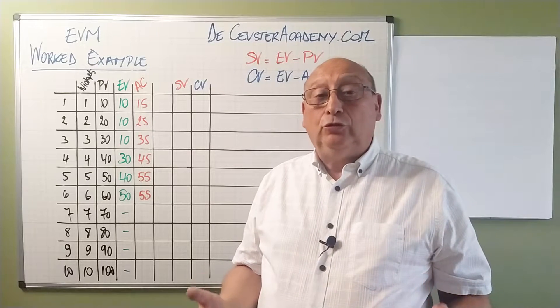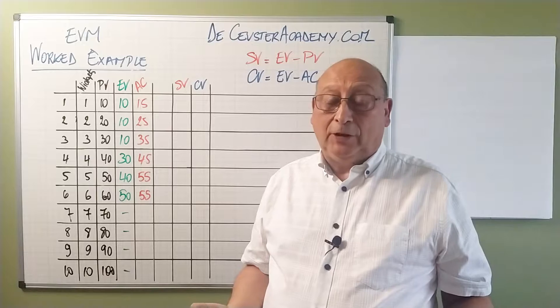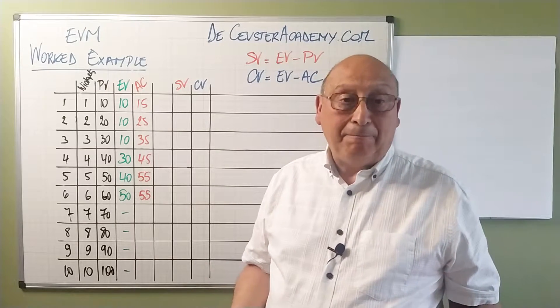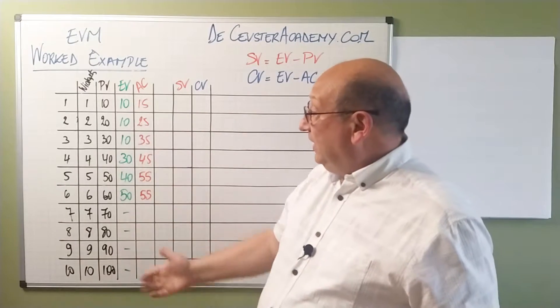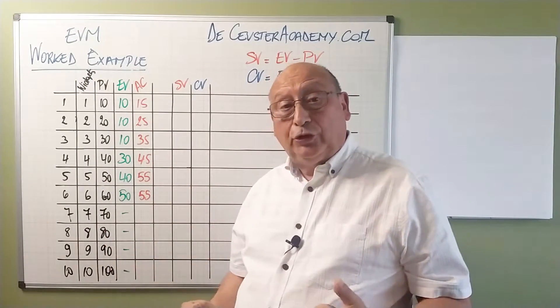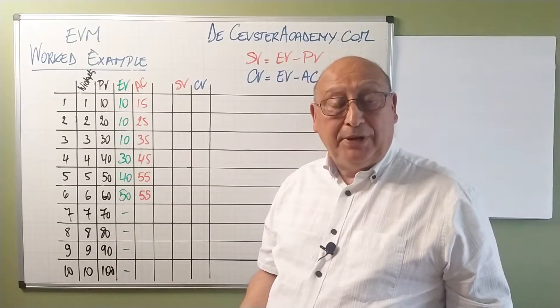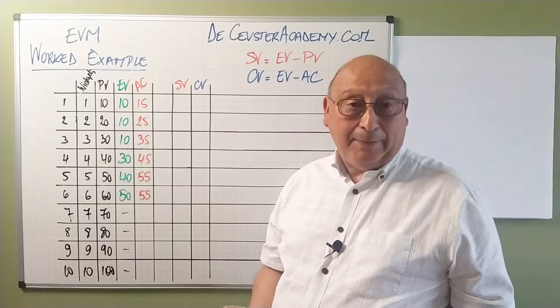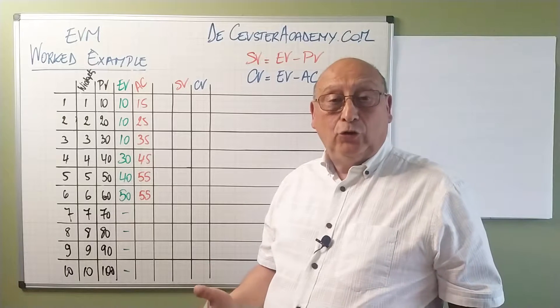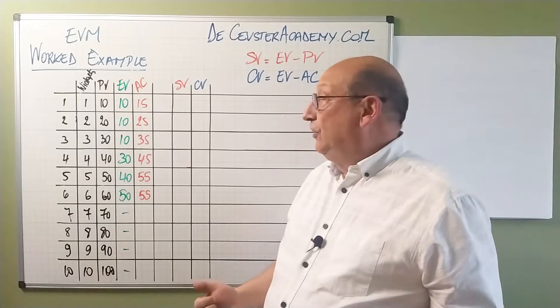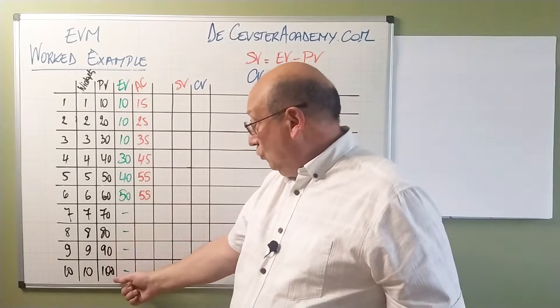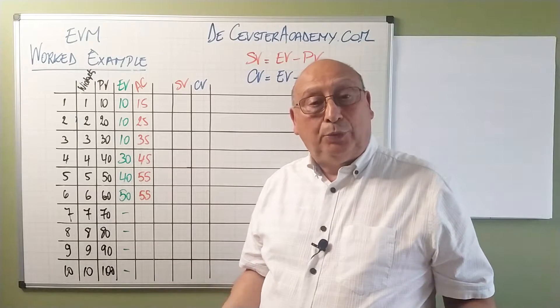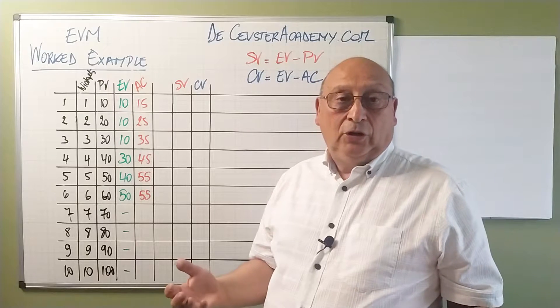What we are going to do now is look at our project and how it is evolving over time. First we have 10 periods, 10 widgets to create over those 10 periods, and the cost for one widget is 10k. So our planned value curve or S curve goes from 10 to 100. It's a linear relationship between time and budget.